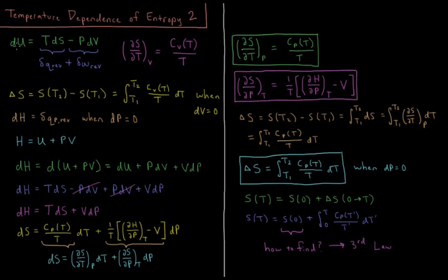During constant volume processes, du is equal to the heat because we're not doing any work. But during constant pressure processes, we derived in previous videos on enthalpy that the change in enthalpy, dH, during a process that is constant pressure, is equal to the heat that occurs during a reversible constant pressure process. We also defined enthalpy to be the internal energy plus the pressure times the volume. So dH is going to be du plus d(pV), and using the product rule on d(pV), we get pdV plus Vdp.